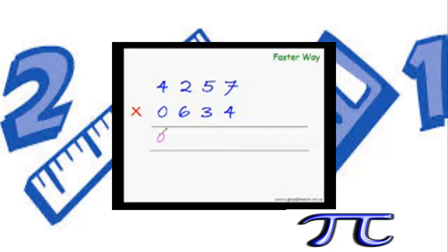This is 0. 0 plus 24 is 24. 0 plus 12 is 12 plus 12 is 24. 0 plus 16 is 16. 30 plus 6 is 36. 36 plus 16 is 42, 52. 42 plus 8 is 50 plus 15 is 65. 21 plus 25, 21 plus 20 is 41. And 4 times 7 is 28. So the final answer is 2, 6, 9, 8, 9, 3, 8.